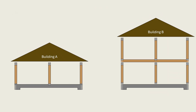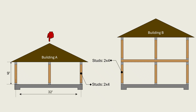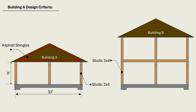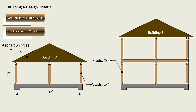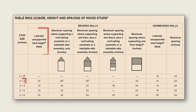Let us look at an example to see how the stud design table defines spacing limits for bearing walls framed with 2x4 studs. Building A is a one-story wood-framed structure with exterior walls that are 9 feet tall and a total building width of 32 feet. The roof is conventionally framed and finished with asphalt shingles, located in a region with a ground snow load of 30 pounds per square foot and a roof live load of 20 pounds per square foot. The exterior walls are bearing walls supporting only a roof-ceiling assembly, with lateral support provided at the top and bottom plates, giving an unsupported height within the 10-foot limit prescribed by the stud design table.